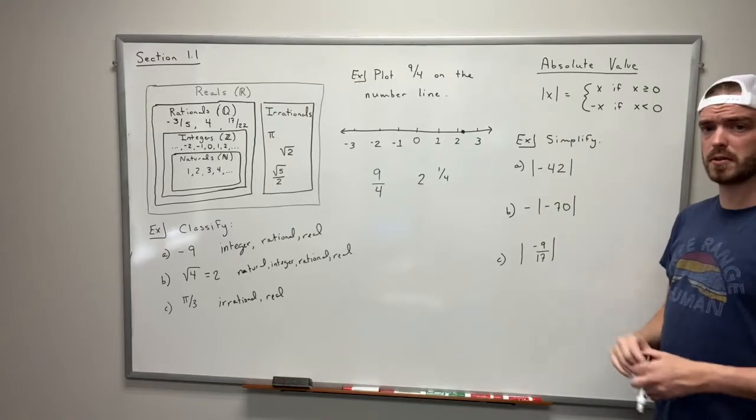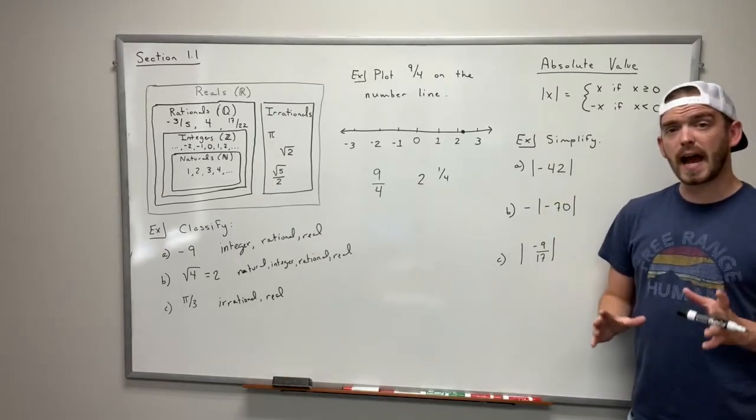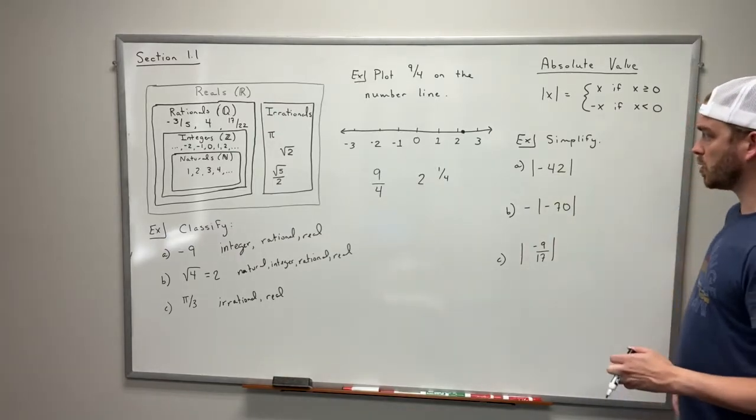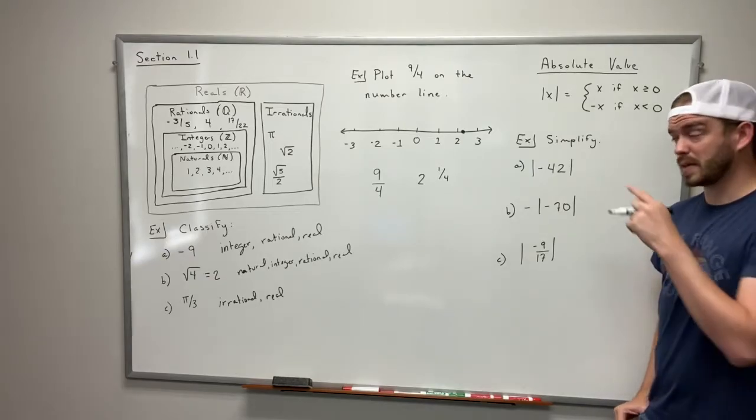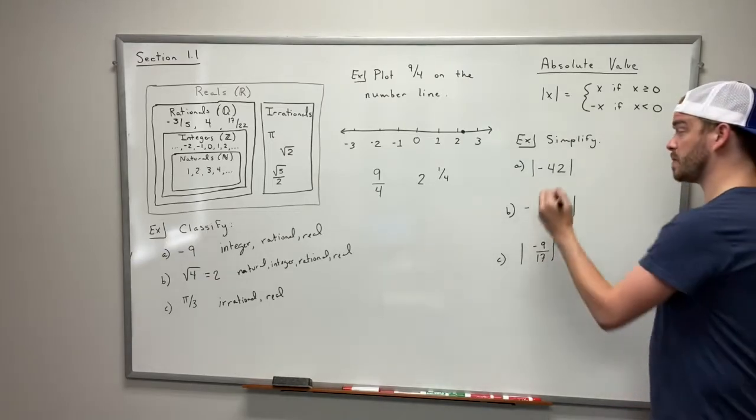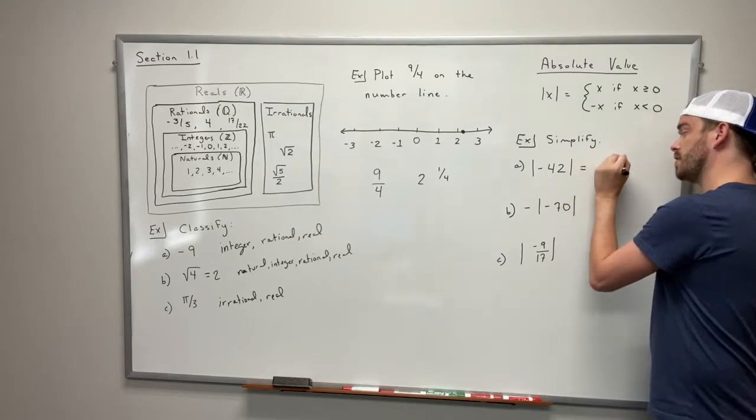Let's do a couple of examples. Example A here says the absolute value of negative 42. Well like we said it's the distance from negative 42 to zero so that's going to be a positive 42.